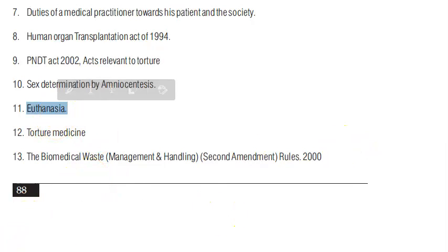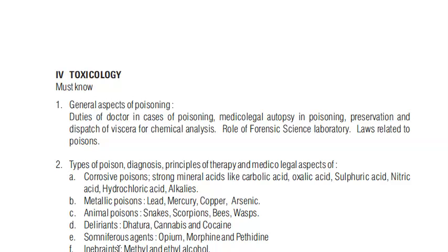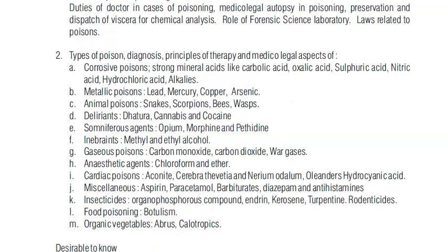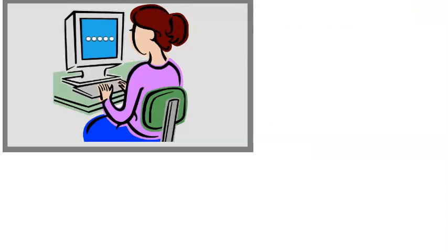Euthanasia is also a topic. In toxicology, you will be taught the classification of poisons - metallic poisons, animal poisons, corrosive poisons, and many other types. You should know the characteristics, symptoms, and specific antidotes for these poisons. In the practical exam, they can keep poisonous items like datura seeds as spotters and ask you to identify the poison - some poisonous plants, seeds, and acids may be presented.